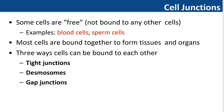Some cells are free — they are not bound to any other cells. For example, our blood cells — the red blood cells and white blood cells — are not attached to each other. The sperm cells are free cells; they can move and are not attached to each other. There are also some other free cells in our body. But most cells are bound together to form tissues and organs.